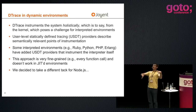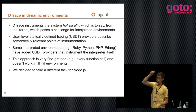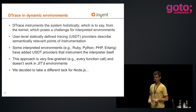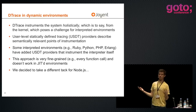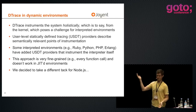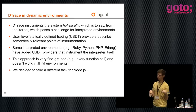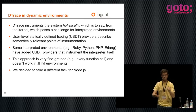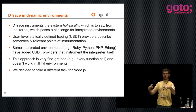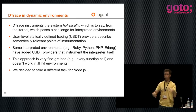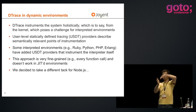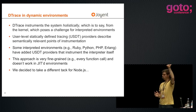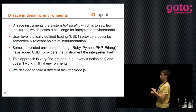DTrace allows us to dynamically instrument the production system — its design center is around production systems. We first shipped it in 2003, it was open-sourced in 2005. It's now in all Illumos-derived systems like SmartOS, all Solaris-derived systems, FreeBSD, and it's on your Mac. Linux ports are in progress. Dynamic environments pose the same kind of problem for DTrace that MDB posed for post-mortem debugging — now I want to instrument the system and understand what's going on at the highest layers of software. The much larger performance wins were not from making the kernel incrementally better, but understanding where the pathology was actually coming from upstack.